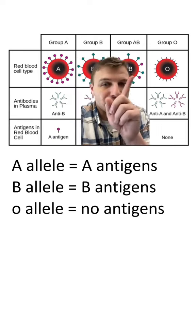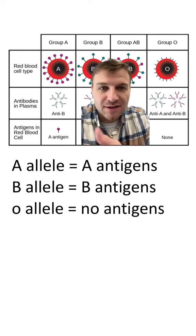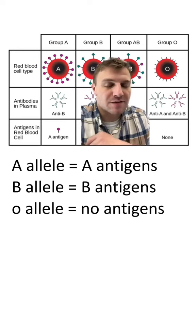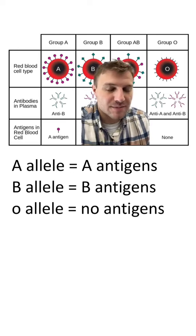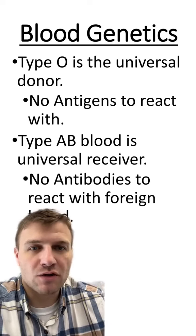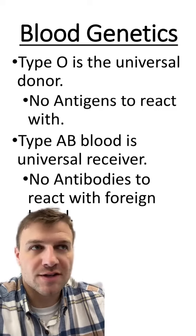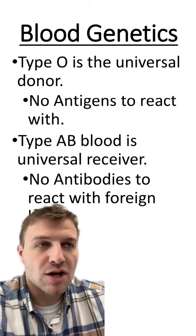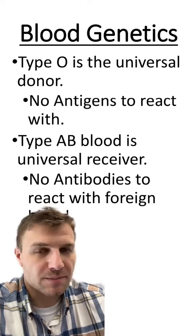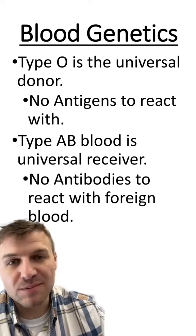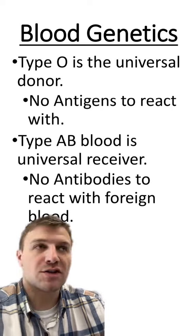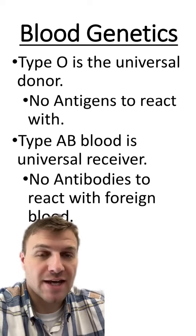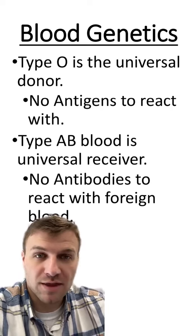If you have O blood, you don't have any of these antigens, but you produce both types of antibodies. So type O blood is called the universal donor, since the blood cells don't have any antigens for the immune system to react with. And AB blood is a universal receiver, since it doesn't have any antibodies to attack foreign blood with.